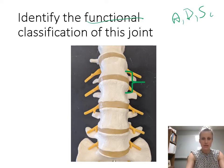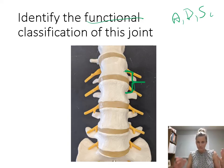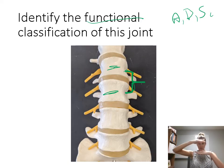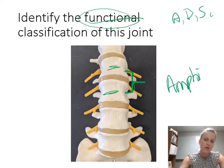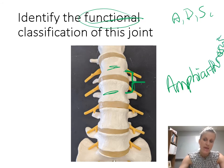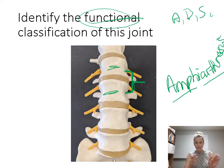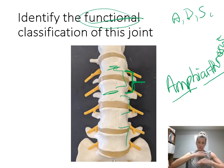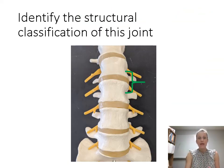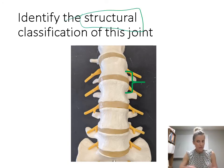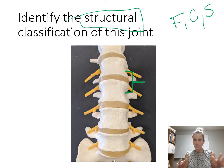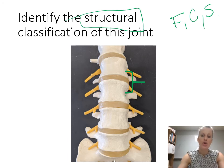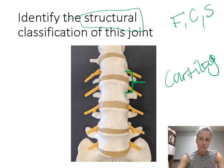This is showing the intervertebral joint — the joint between vertebrae, where two vertebral bodies come together with a cartilage disc between them. The question asks for the functional classification. This joint is an amphiarthrosis — a joint that allows a little bit of movement. Each intervertebral joint allows a slight movement as we flex and extend the spine. Now asking for the structural classification — remember the choices are fibrous, cartilaginous, and synovial. This joint is cartilaginous. Cartilaginous joints don't have a lot of space between the bones and typically have a thick cartilage pad present between them.